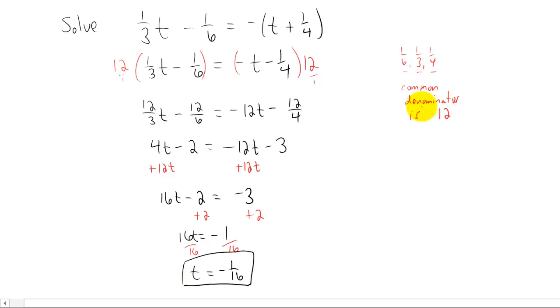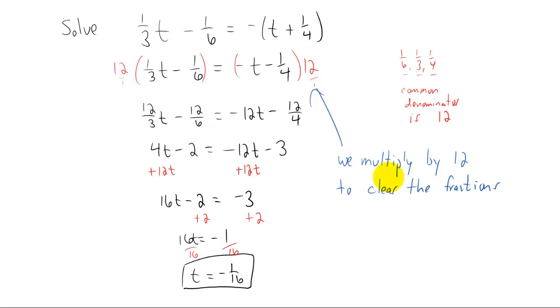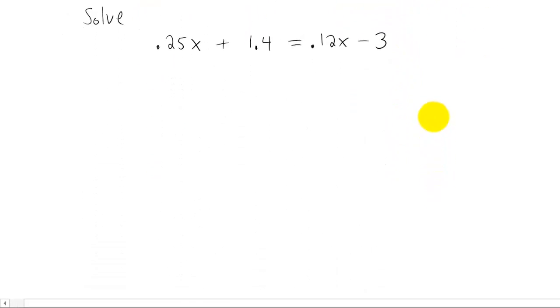Just a little bit of vocabulary. We found that the common denominator of all of our fractions in this problem was 12. So we multiply by that 12 to do what we call clearing the fractions. And that means we just get rid of all the fractions. Up here in this problem, we had fractions. Right down here, we no longer had fractions. So we cleared them out. Okay, so that's a nice way to solve a linear equation that has fractions in it. Let's take a look at a linear equation that has decimals.